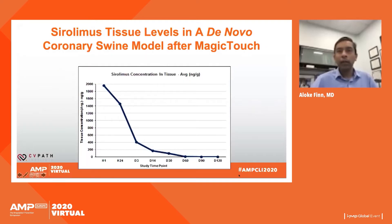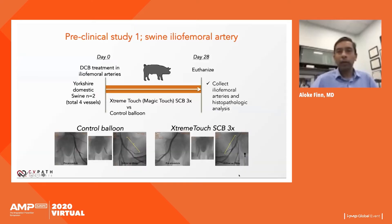The Magic Touch sirolimus-coated balloon is one solution. It encapsulates sirolimus in phospholipid microparticles and transfers them to the arterial wall, where they stay and deliver drug over approximately 60 days. In the coronary swine model, tissue levels of sirolimus were detectable up to 60 days, confirming successful drug transfer and sustained elution.